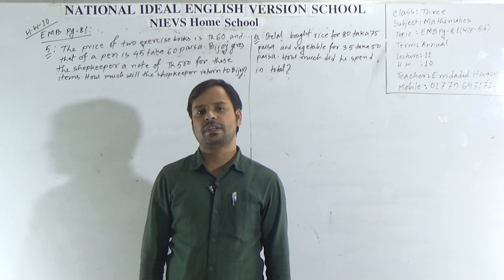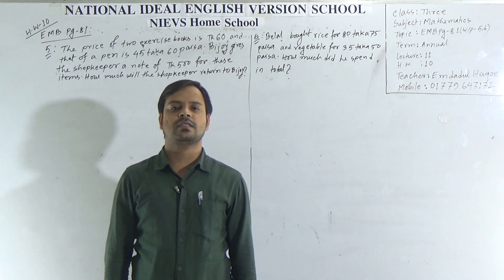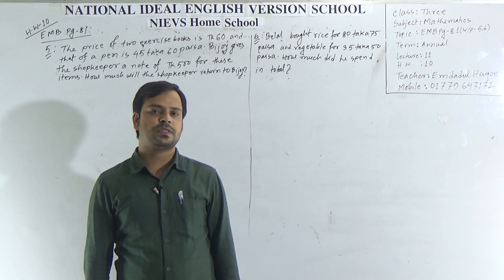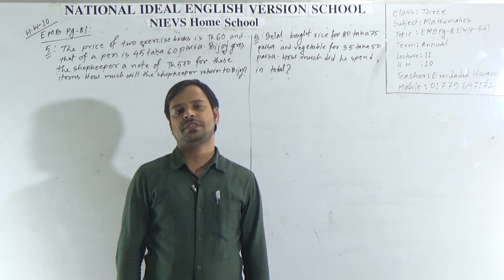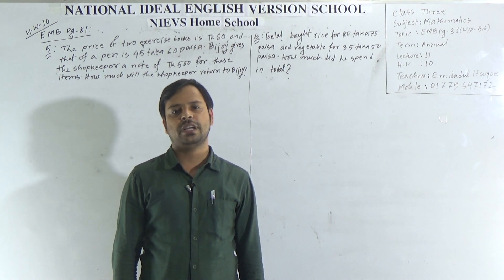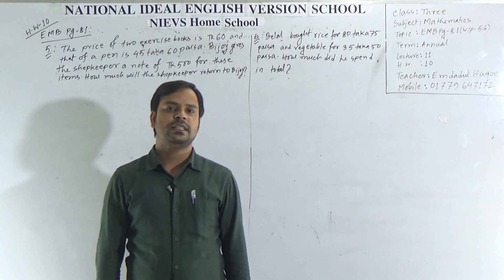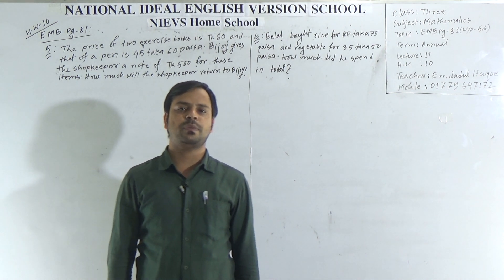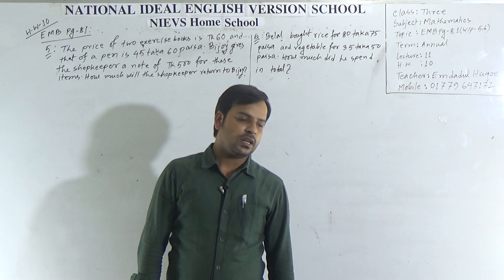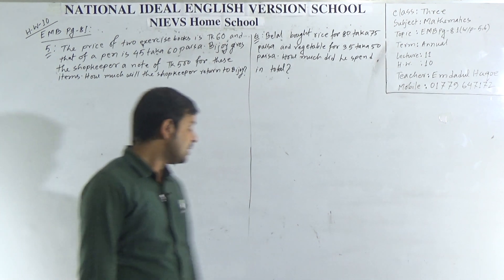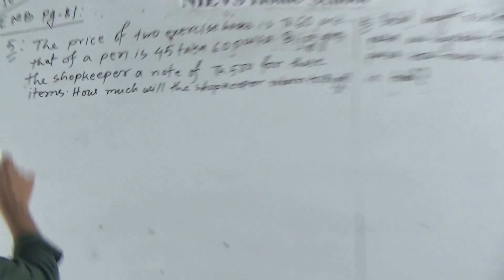Dear students, today I am going to take a math class of class 3. Our today's topic is EMB page 81 — that means Elementary Mathematics Book page 81 — word problems 5 and 6. These two word problems I will solve today. In the last class I solved word problems 3 and 4. Today I will solve 5 and 6. These two word problems you will also do as your homework.